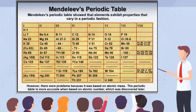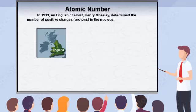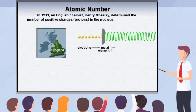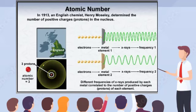You will learn how atomic numbers were determined in the following scene. In 1913, an English chemist named Henry Moseley discovered he could determine the number of positive charges in the nucleus by bombarding metals with electrons. This bombardment produced X-rays with different frequencies for each element he tested, and the frequencies correlated with the number of positive particles, or protons, in the nucleus.